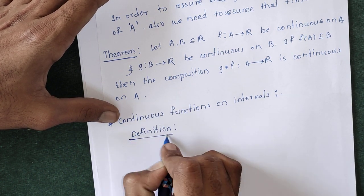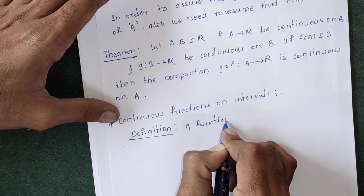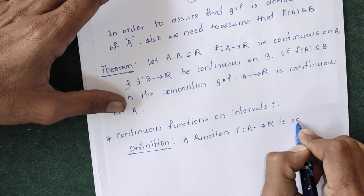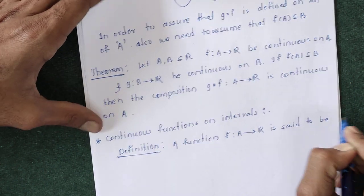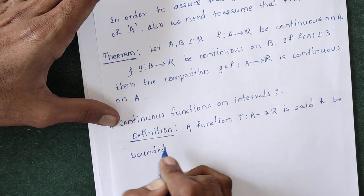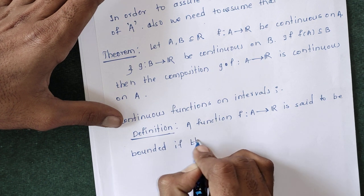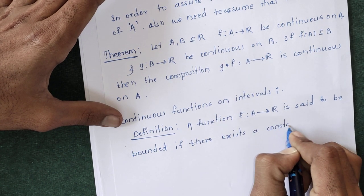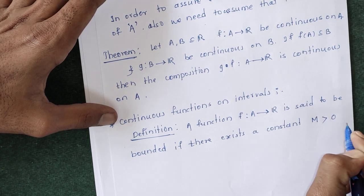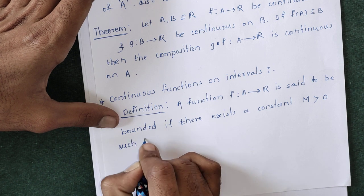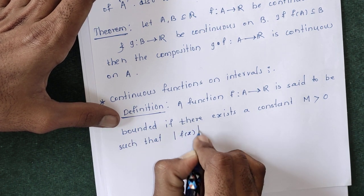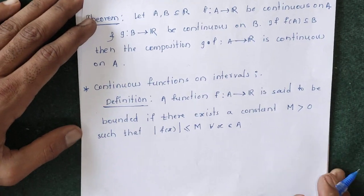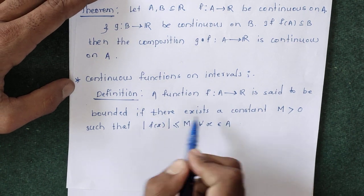Definition: A function f from A to R is said to be bounded if there exists a constant M greater than 0 such that |f(x)| ≤ M for all x belonging to A. That is, for every element of the domain, the image of that element must be less than or equal to M; then that function is said to be a bounded function.